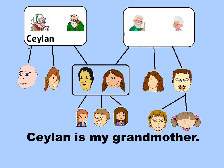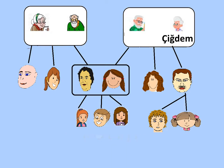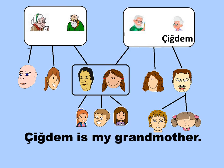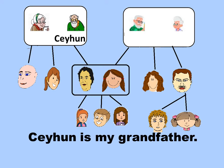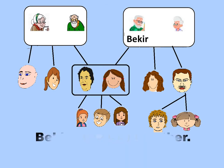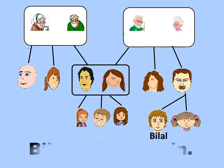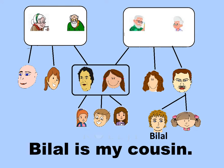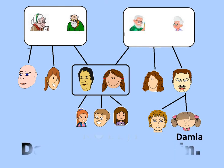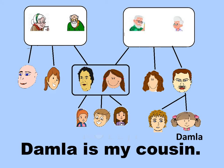Ceylan is my grandmother. Chidem is my grandmother. Ceyhun is my grandfather. Bekir is my grandfather. Bilal is my cousin. Damla is my cousin.